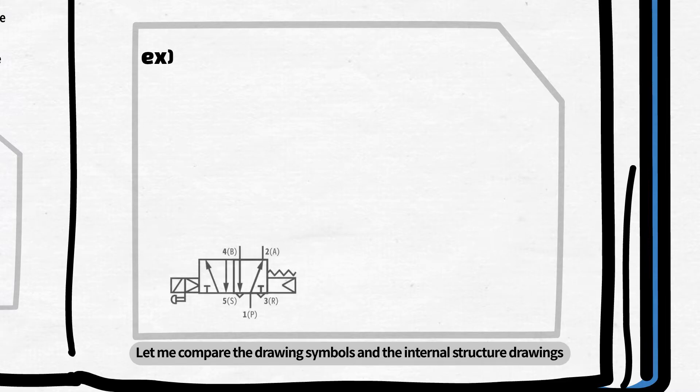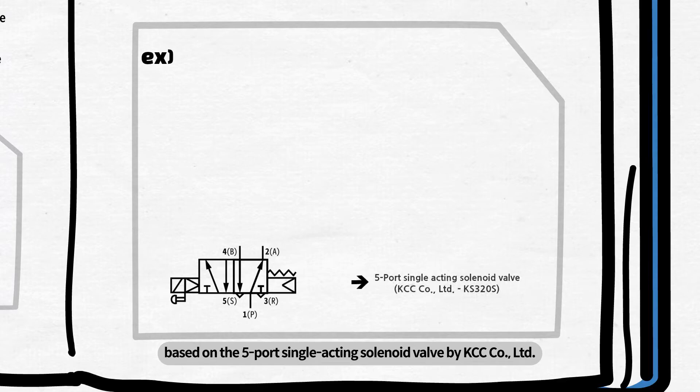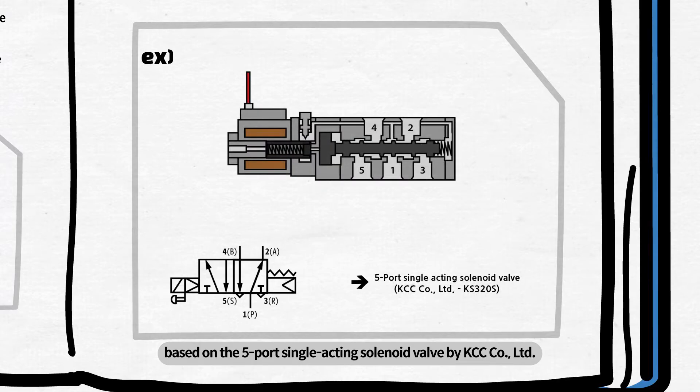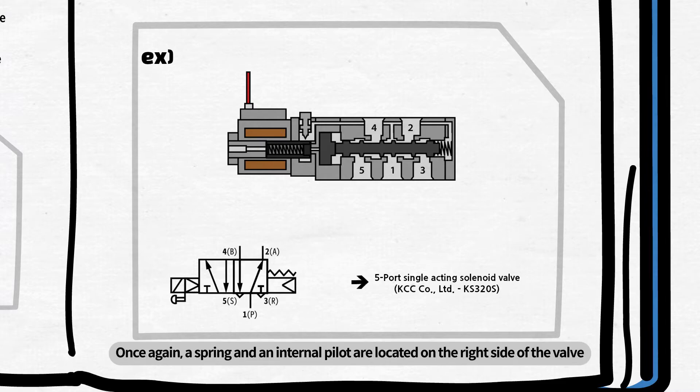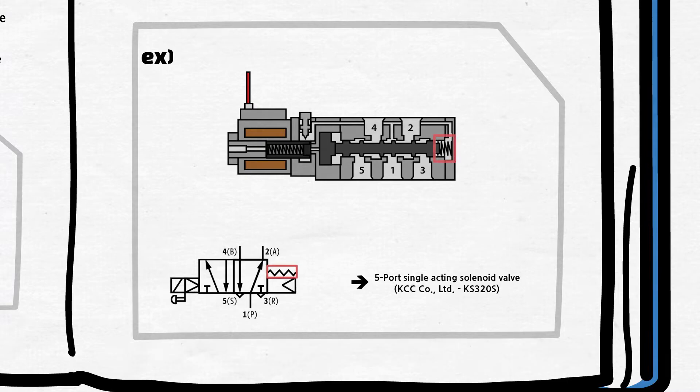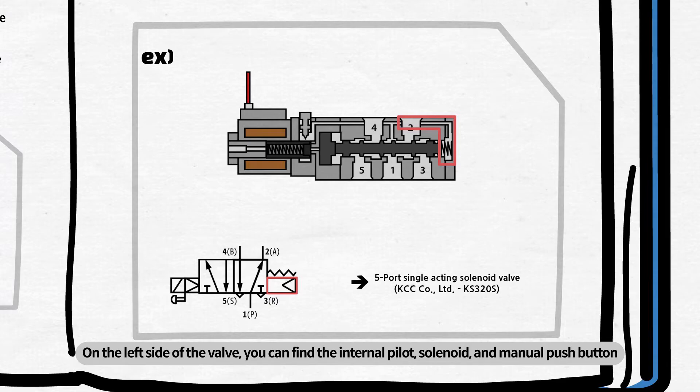Let me compare the drawing symbols and the internal structure drawings based on the five-port single-acting solenoid valve by KCC Company Limited. Once again, a spring and an internal pilot are located on the right side of the valve. On the left side of the valve, you can find the internal pilot, solenoid, and manual push button.